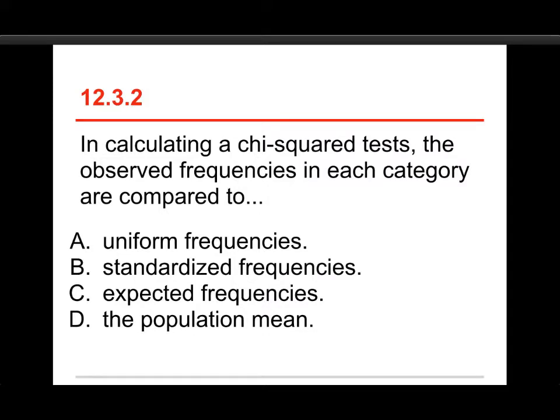Number two, in calculating the chi-squared tests, the observed frequencies in each category are compared to A, uniform frequencies, B, standardized frequencies, C, expected frequencies, or D, the population mean. The answer is expected frequencies. That's the basis that we use.